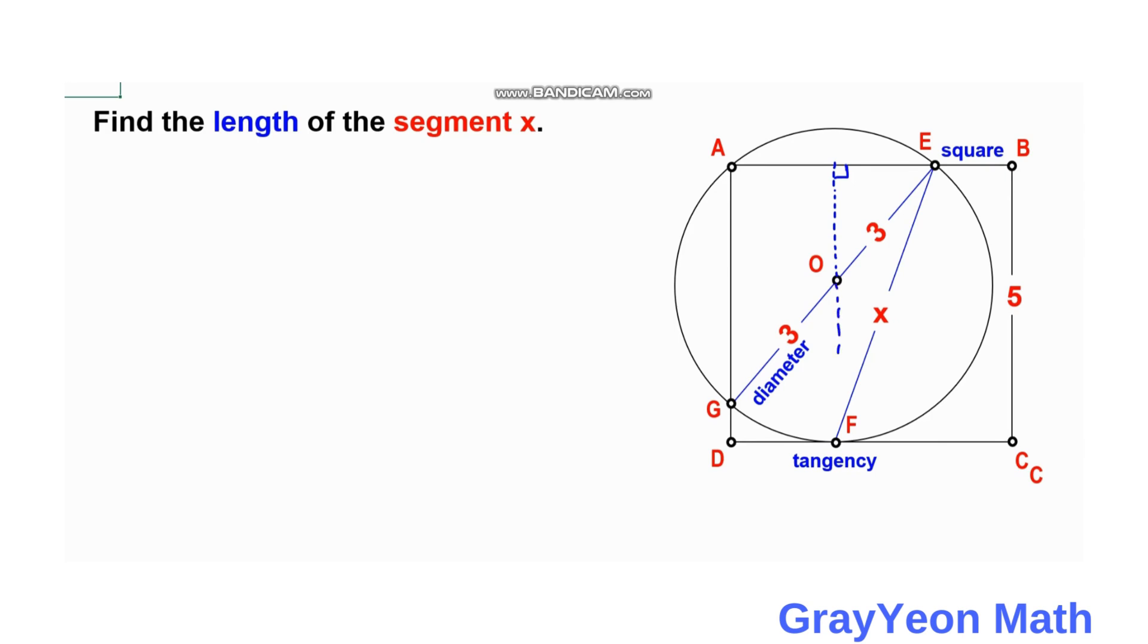Notice that the radius of the circle is 3, so if we draw a line from O to F, this is actually 3 units. And if the total length of the square is 5, then this length is actually 5 minus 3, or is equal to 2 units.